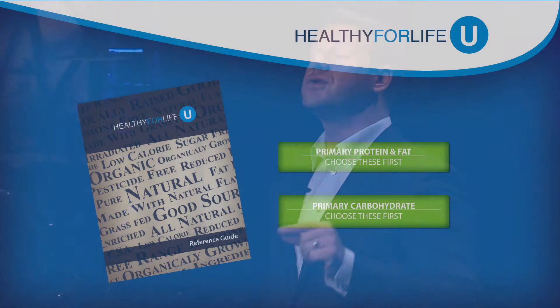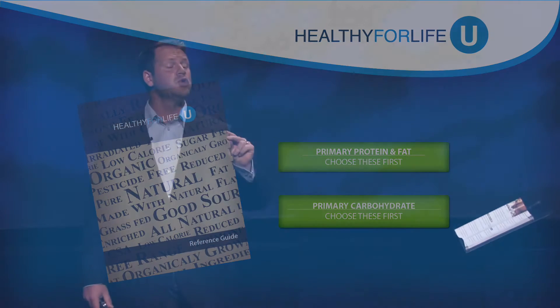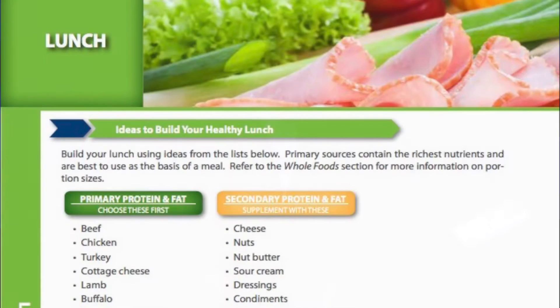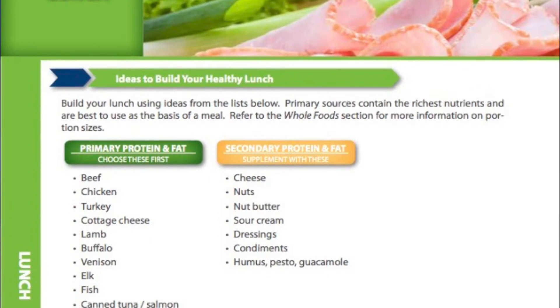The color coding in the Meal Planning Guide: green are the primary foods that you can consume freely. I'm not telling you to count calories. These foods will fill you up and you will know when you are full. Do not eat past being full. Green are the foods you want to build your meal plan on.